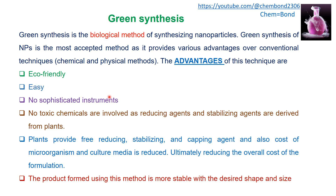No sophisticated instruments are required, and no toxic chemicals are involved, because the reducing agent and stabilizing agent used in nanoparticle formation are derived from plants. Plants provide free reducing, stabilizing, and capping agents — these are chemical reagents derived from phytochemicals that can be used for nanoparticle formation.